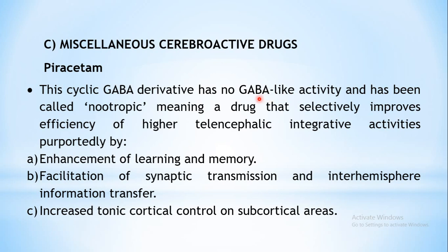GABA produces its inhibitory action by acting on the GABA receptors on a chloride channel — the GABA-BZD chloride channel, as we have already seen under the sedative hypnotic chapter. GABA binds to its receptor, specifically the GABA-A receptor, and opens the chloride ion channels. By the inflow of these chloride ions there is a change in potential resulting in stabilization or inhibition. That is how it acts as an inhibitory transmitter. But piracetam, though a GABA derivative, does not bind to the GABA receptor.